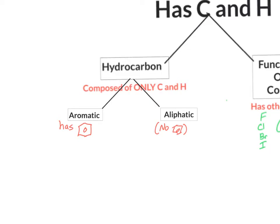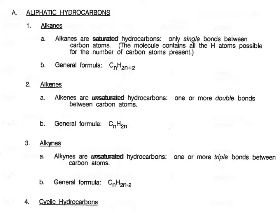We're now going to focus our attention on the aliphatic compounds. A subcategorization of aliphatic hydrocarbons is to decide whether the compound is cyclic or acyclic. A cyclic compound simply has a carbon ring that goes around and connects itself on the other side. An acyclic hydrocarbon does not connect itself into a ring. We will not be looking at the difference between cyclic and acyclic hydrocarbons any further, except to mention that there will be some differences in the way that we name them. Within aliphatic hydrocarbons, there are three major classes: the alkane, the alkene, and the alkyne.